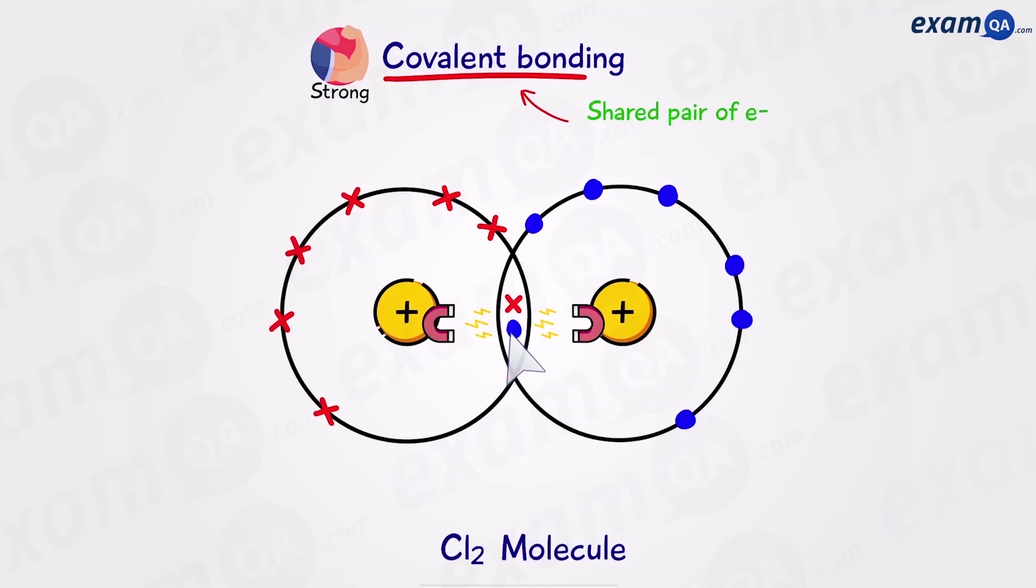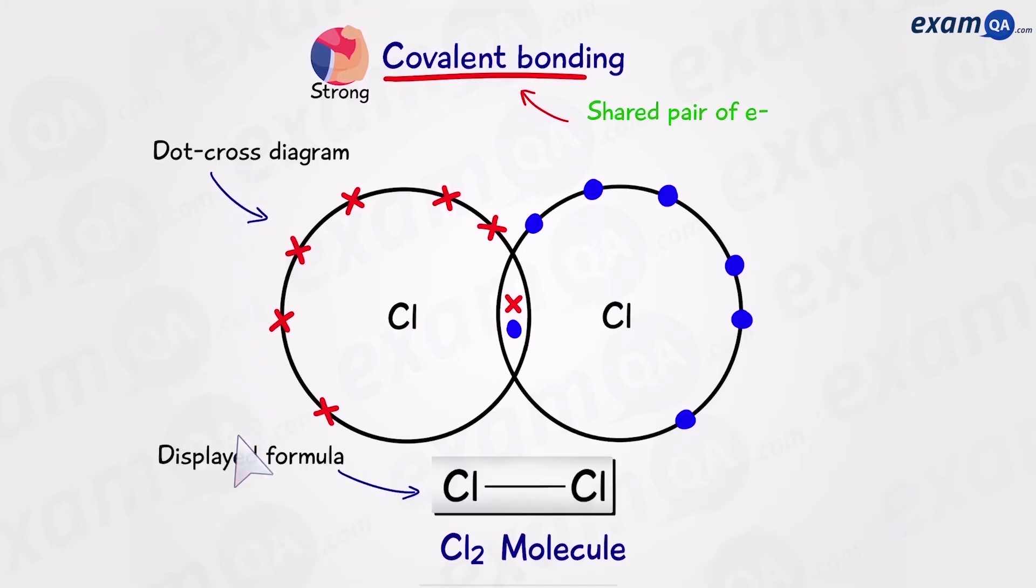We'll talk more about the properties of covalent molecules later on. For now, we're going to practice drawing some more molecules. Now what we have here is a chlorine molecule. And this diagram is called a dot and cross diagram. However, we could also draw it as a displayed formula. So we have two chlorine atoms and the line in the middle represents the covalent bond. One line for two electrons.